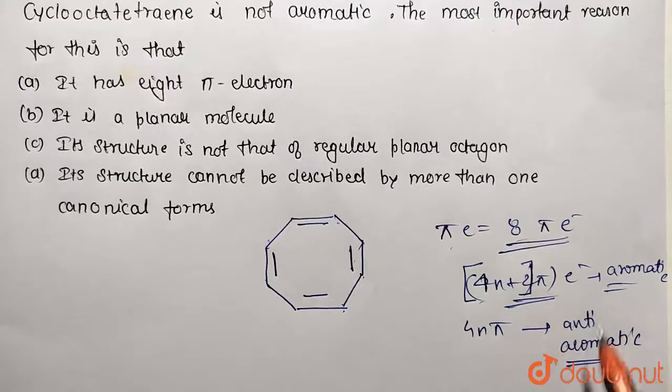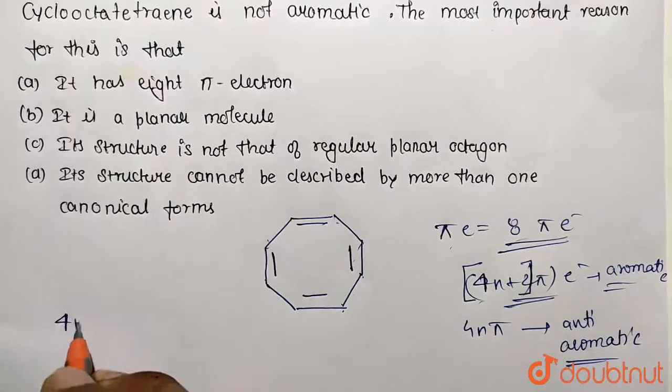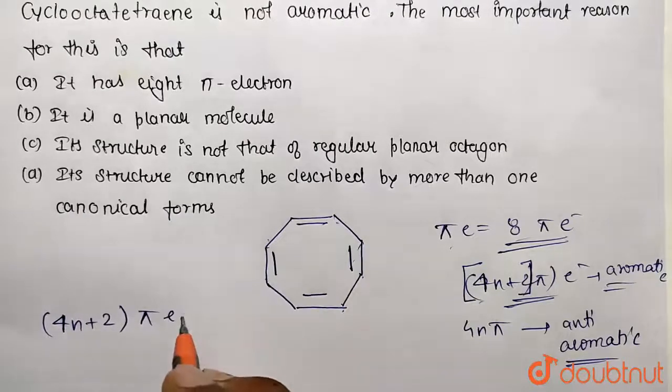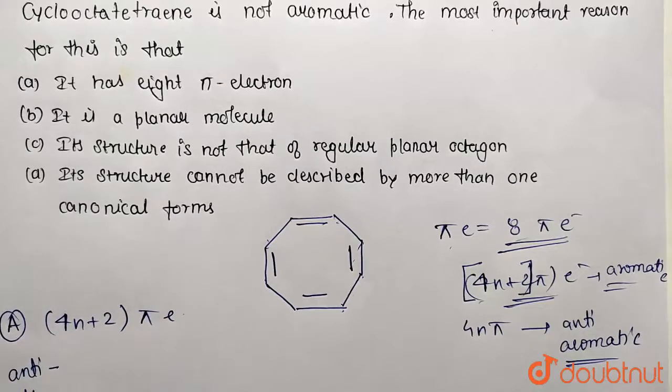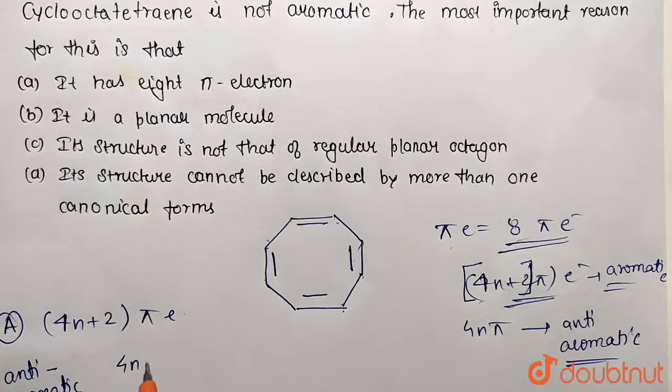So this was for aromatic. Let me write clearly: 4n+2 pi electron system, this is for aromatic. And anti- means against the aromatic, so anti-aromatic is represented by the formula 4n pi.